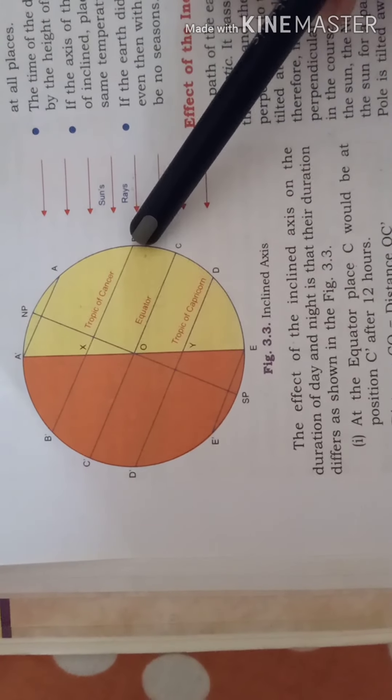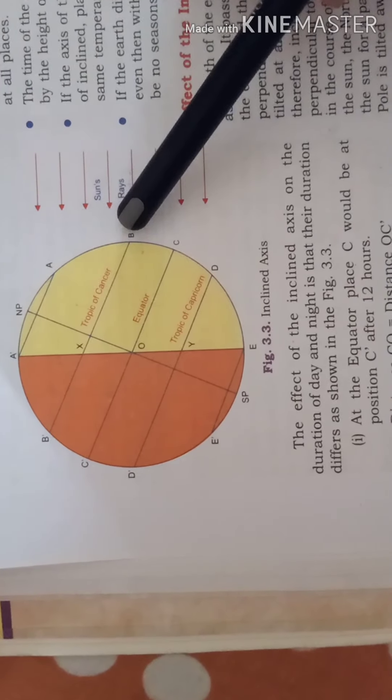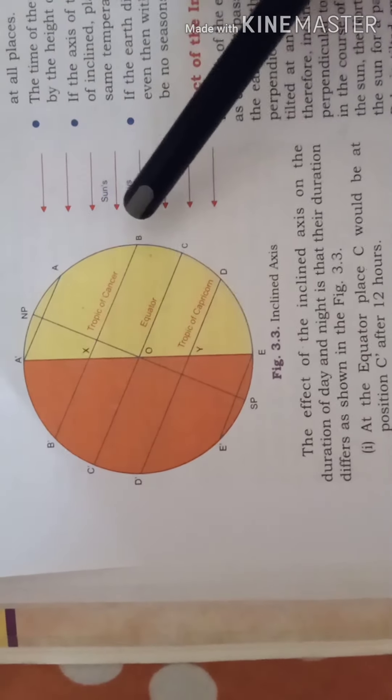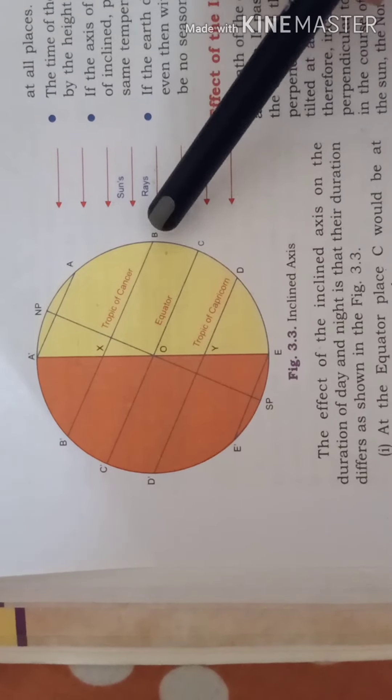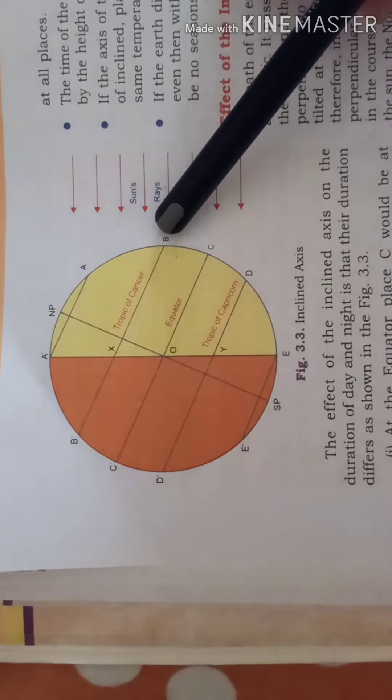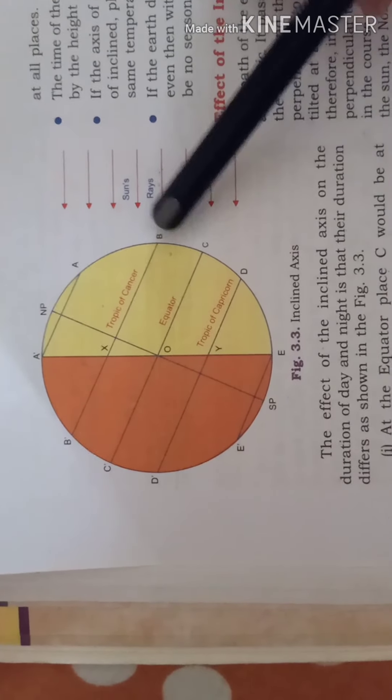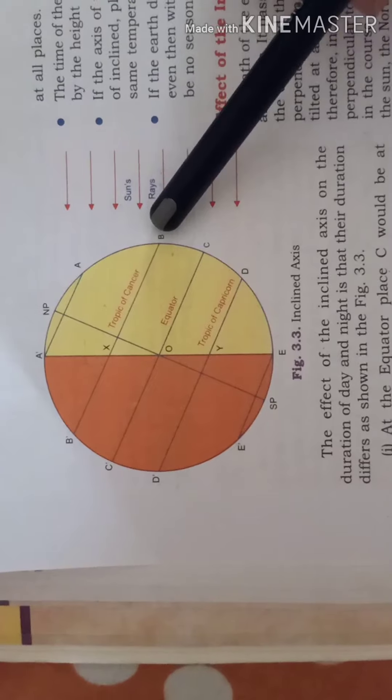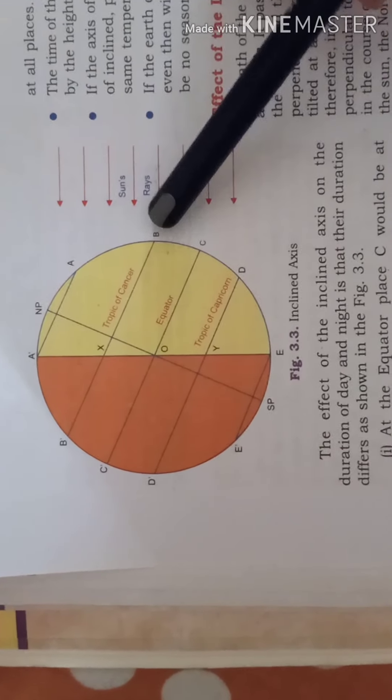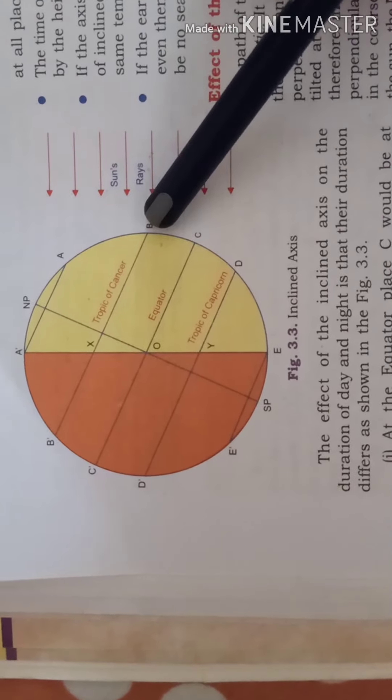When we come to Tropic of Cancer because the northern hemisphere is tilted towards the sun you can relate it to the fact that in India also we are living in the northern hemisphere. During the summer season which we are experiencing now you can see that the days are longer and the nights are shorter. As you can see the sun rises early but it sets late. Similarly the nights are much more shorter.